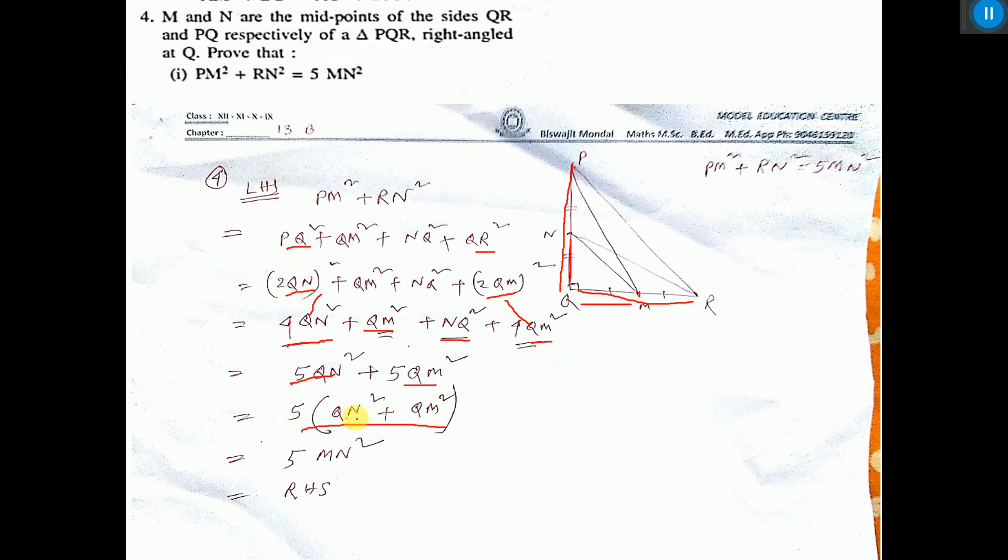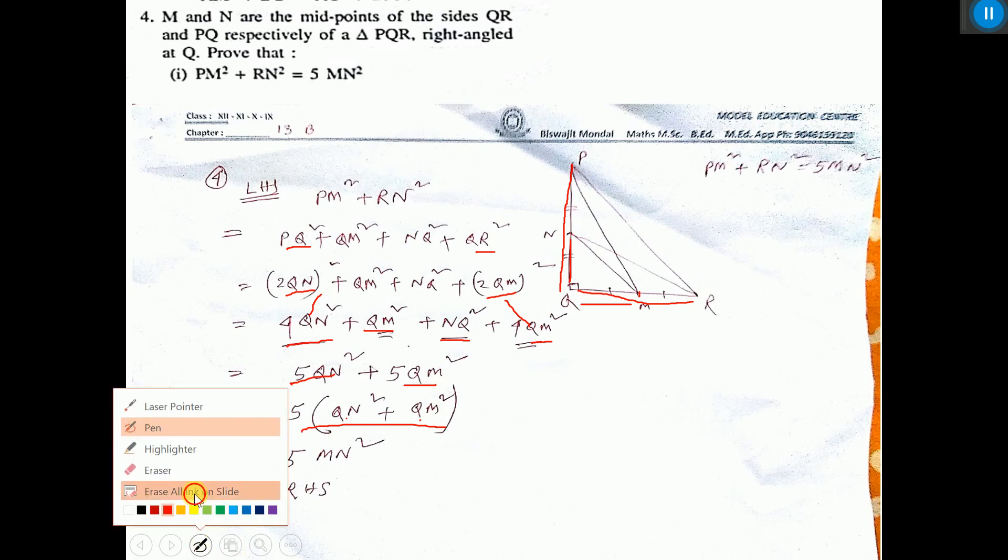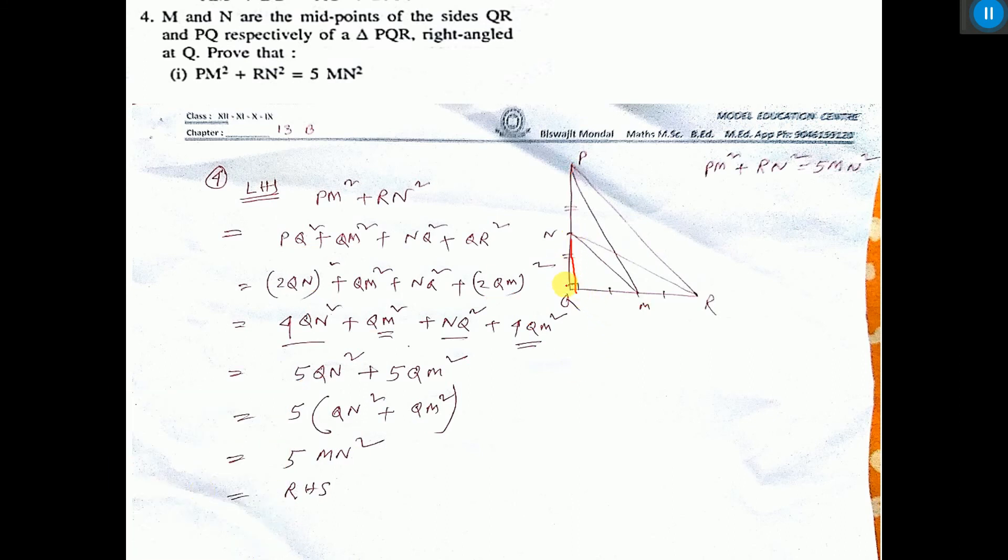Now see QN² + QM² here. From the diagram you see, QN² + QM² is equal to NM² by Pythagorean theorem. So that is MN² written in place of this. And the right hand side has come.